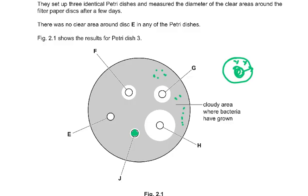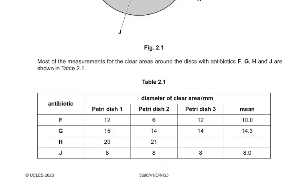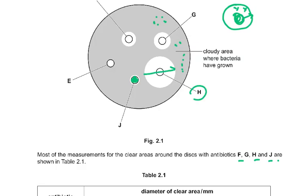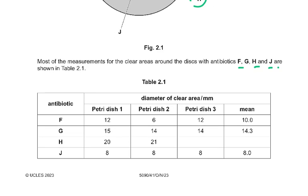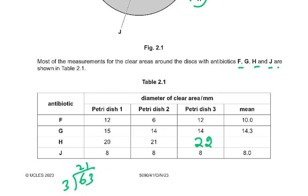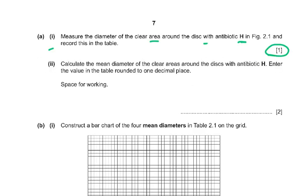Most of the measurements for the clear areas around the discs with antibiotics F, G, H, and J are shown in Table 2.1. Part A1: measure the diameter of the clear area around the disc with antibiotic H in Figure 2.1 and record this in the table. You had to measure this area and record it in the table. This was petri dish 3 H — it is 22 millimeters. Anything between 20 and 22 millimeters was allowed. Then it says calculate the mean diameter and enter the value in the table rounded to one decimal place, with space for working.